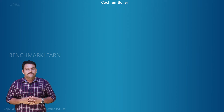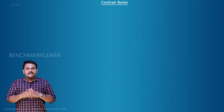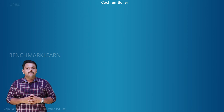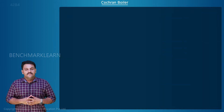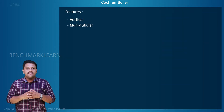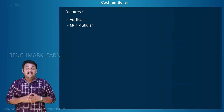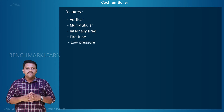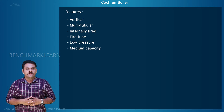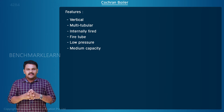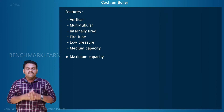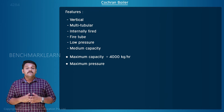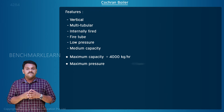In this video, we explain the Cochrane boiler. It is a vertical multi-tubular, internally fired, fire tube, low pressure, medium capacity boiler. Its maximum capacity is 4,000 kilograms per hour and its maximum pressure is 15 bar.